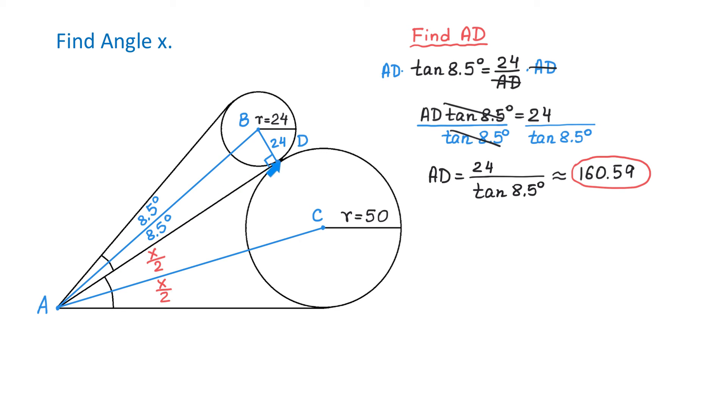We found AD and now in the larger circle, let's connect points C and D. Then CD is the radius of this circle and it is perpendicular to AD. Now we have another right triangle ADC. In this right triangle, the side CD is 50 units.